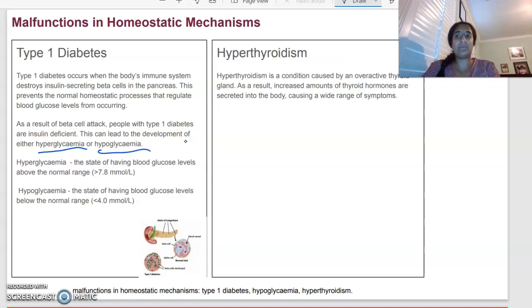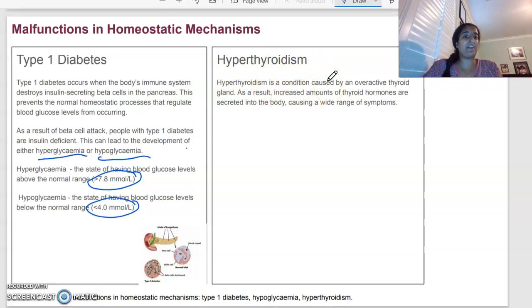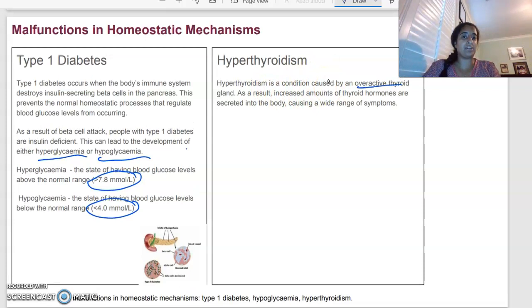So hyperglycemia is basically where your blood glucose levels are constantly above the normal range and hypoglycemia is where the blood glucose levels below the normal range. Looking at hyperthyroidism, that is basically a condition caused by an overactive thyroid gland. So in this case, there's basically increased thyroid hormones secreted into the body and this can cause a wide range of symptoms as well.